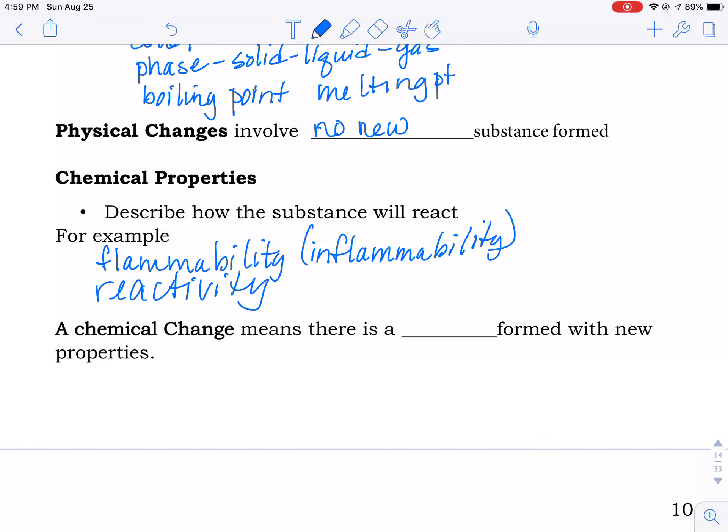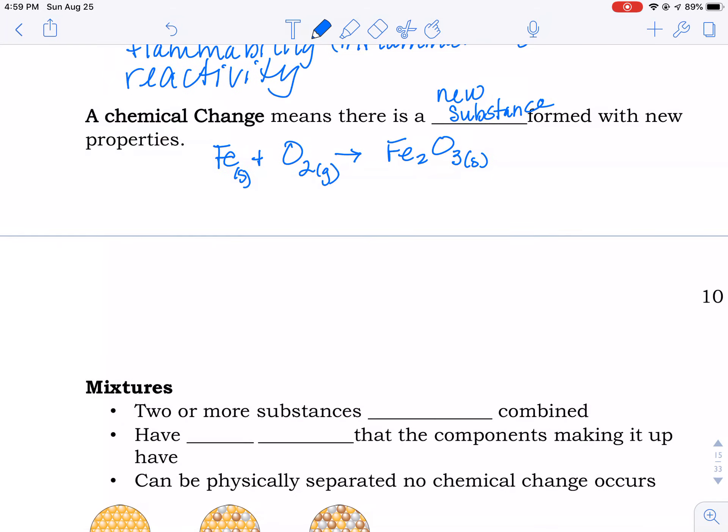A chemical change means there is a new substance formed with new properties. Here's an example. Iron plus oxygen will rust and make iron three oxide. Iron is a solid, the oxygen is a gas. We have something new that's red colored and it's all over your bike frame or something like that.